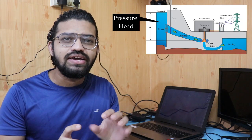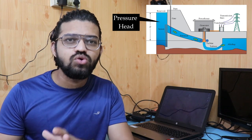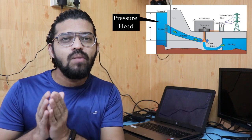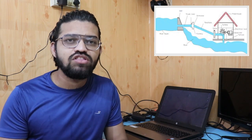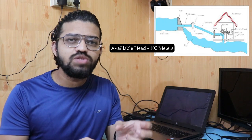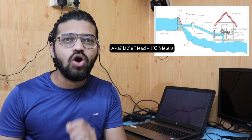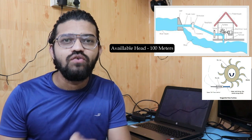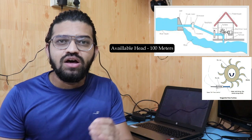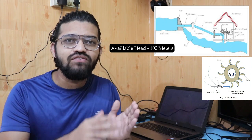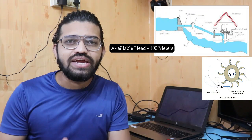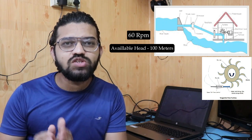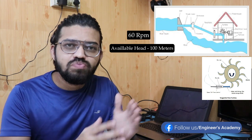First of all, we have to understand that in any turbine a certain amount of head gets imparted on the turbine blade, causing it to rotate and ultimately produce power in the form of electricity. For example, in the case of a Pelton wheel turbine, if the available head is 100 meters, that head causes the Pelton wheel to rotate at a certain speed — let's say 60 RPM. This 60 RPM is the speed of the Pelton wheel turbine; it is not the specific speed.